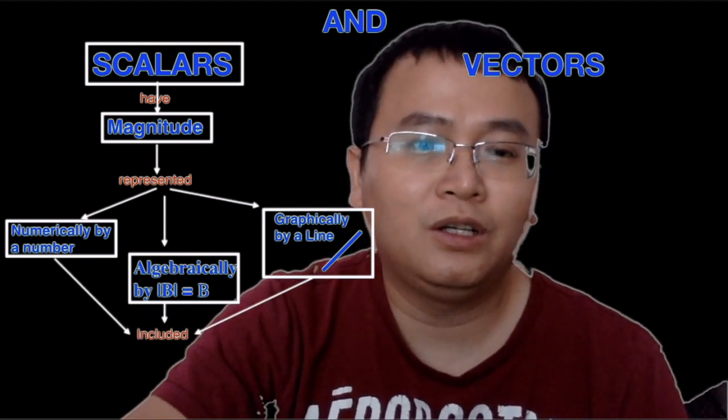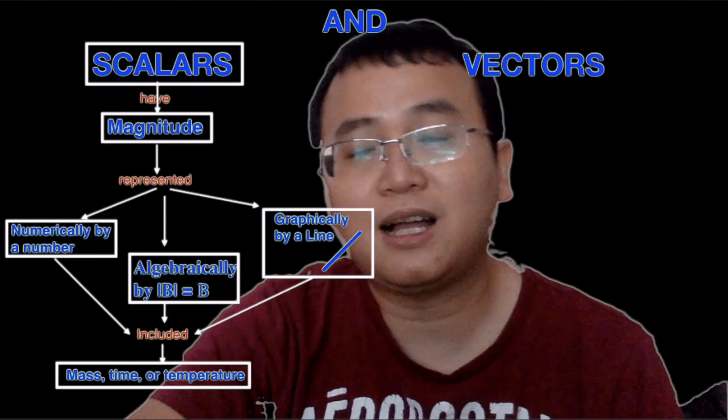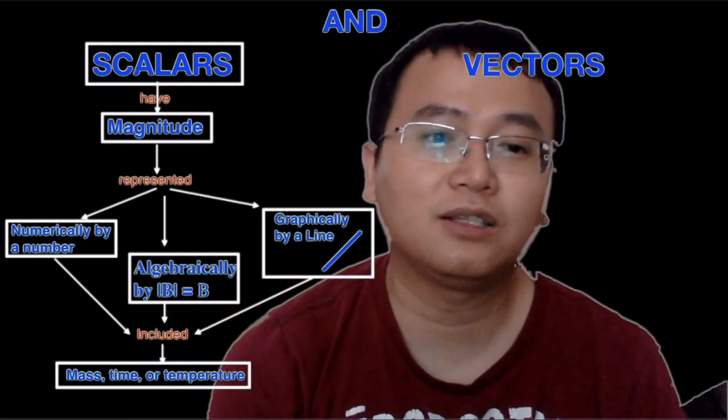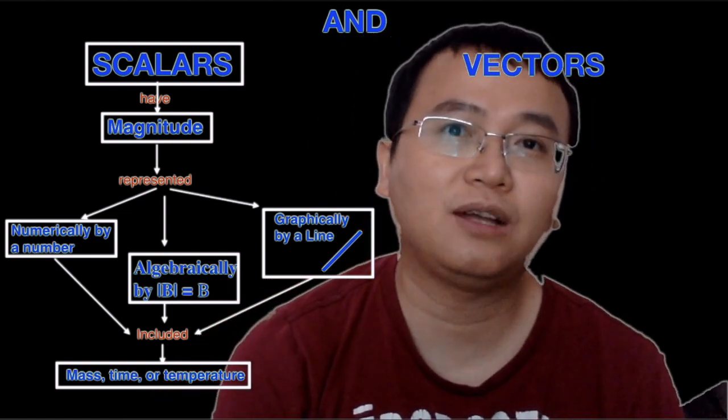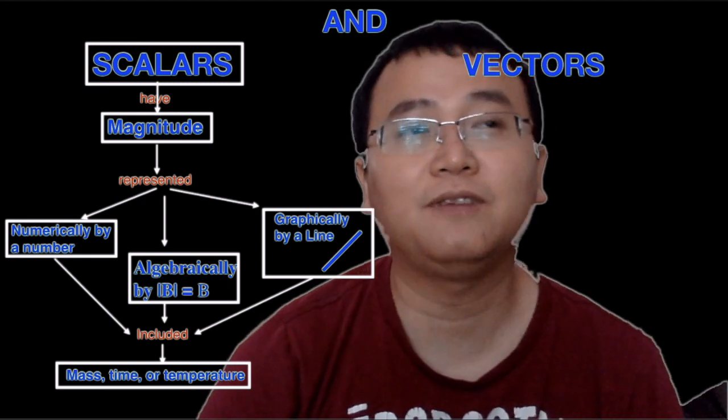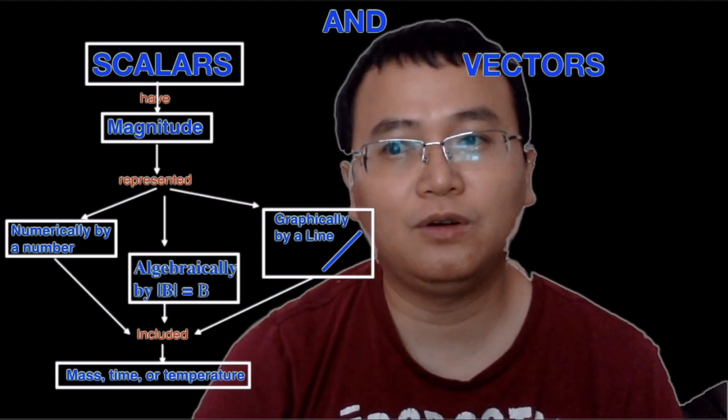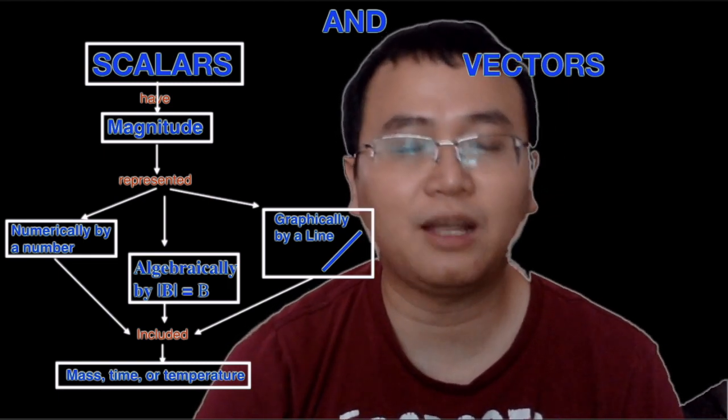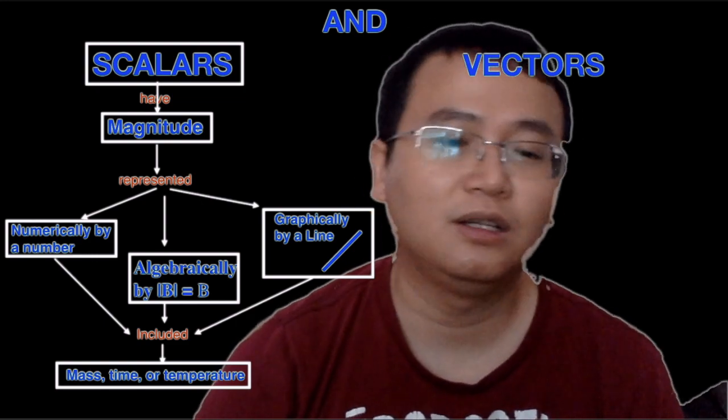It includes things such as mass, time, or temperature. They are scalar because temperature, you have for example 75 degrees Fahrenheit, and therefore it just tells you the magnitude of the temperature. It doesn't tell you direction. Same goes for mass.